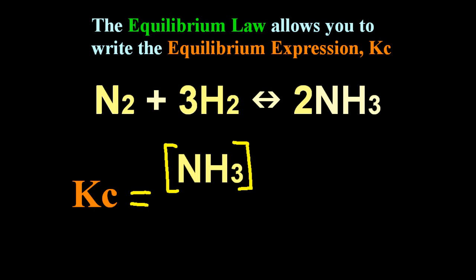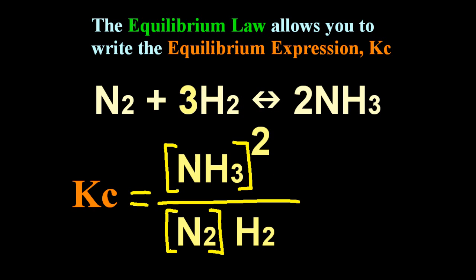Take the products of your equilibrium and raise them to the power of their coefficients, and put them at the top of this fraction. And then at the bottom, take your reactants and raise them to the power of their coefficients. Multiply, don't add. And that is the equilibrium expression, Kc.